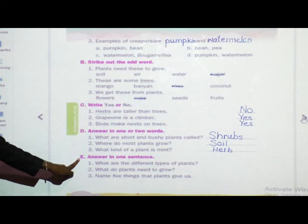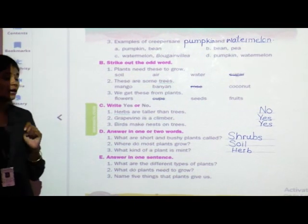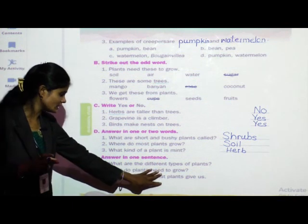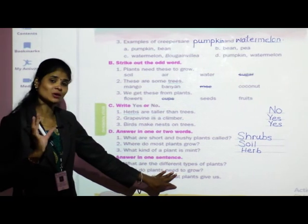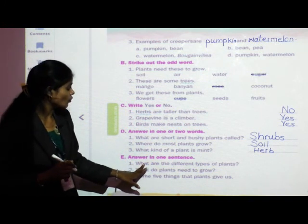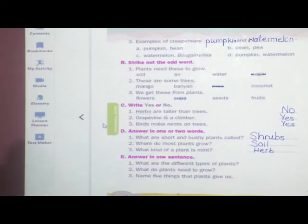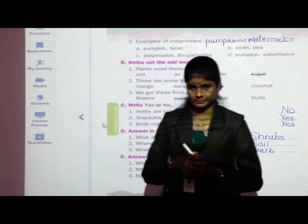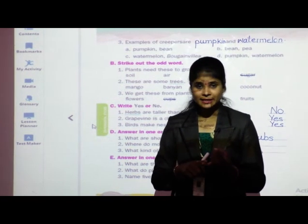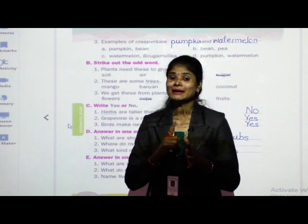Question E: answer in one sentence. We will answer orally. First question: what are the different types of plants? The different types of plants are trees, shrubs, herbs, climbers, and creepers.